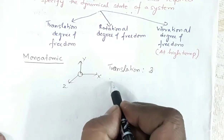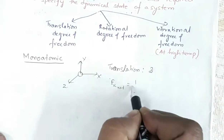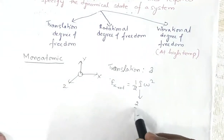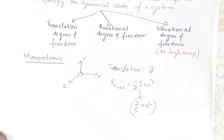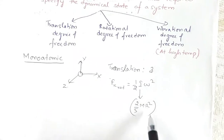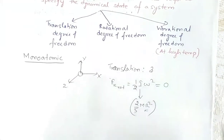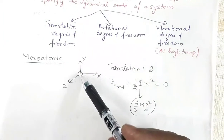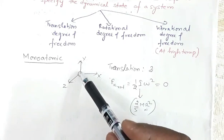Now what about rotation? The rotational kinetic energy is ½Iω². If we assume this to be a solid sphere, I = (2/5)mr², where m is the mass and r is the radius. For a single atom, r will be very small, so r² will be further very small, meaning rotational kinetic energy can be neglected. So there is no degree of freedom due to rotation.